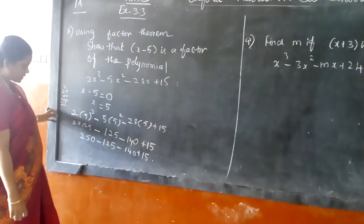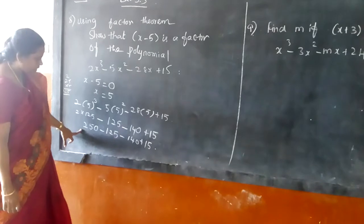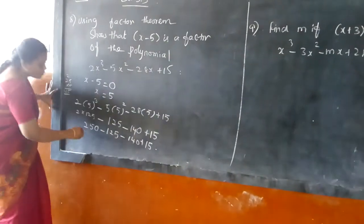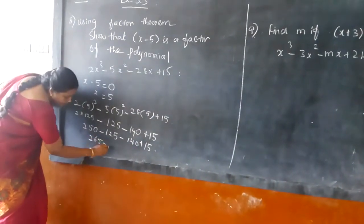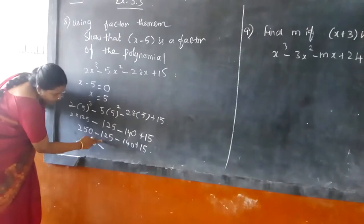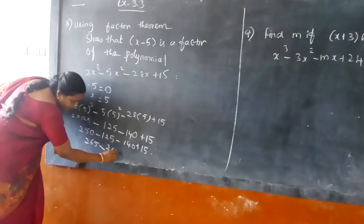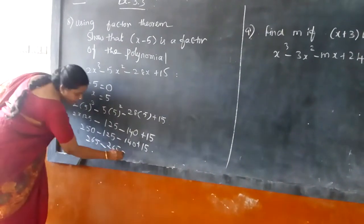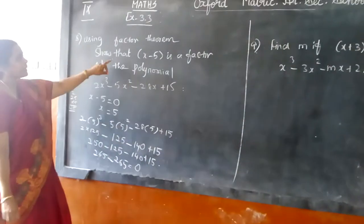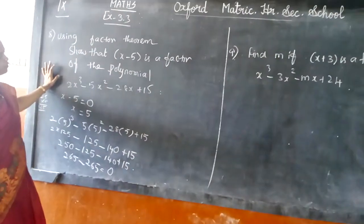So that 125 into 250 minus 125 minus 140 plus 15. Now you can add all the positive signs: 250 is there and 15 is there, so 265 minus 265, which is both in minus. So we are getting the answer to be 0. So I can say that x minus 5 is a factor of the polynomial.